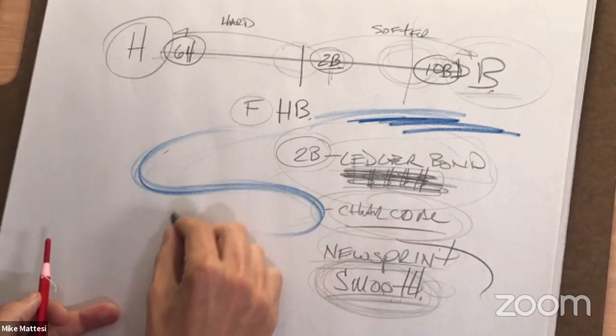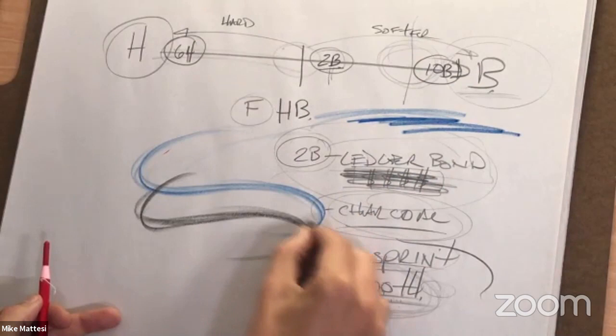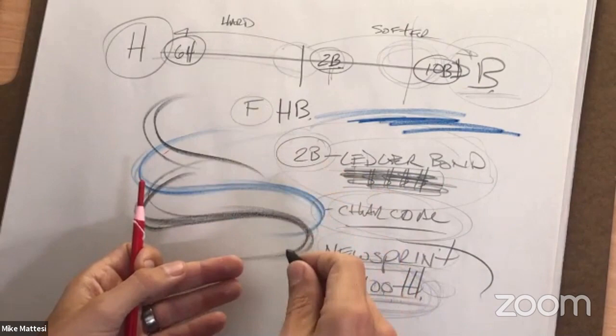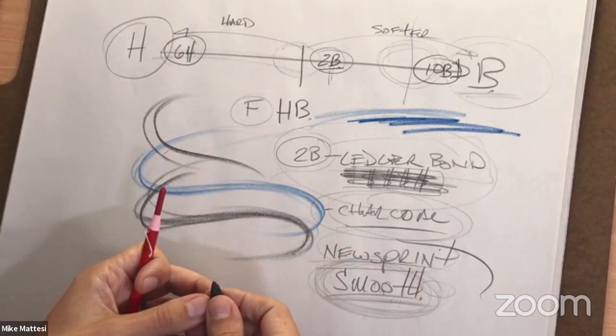Caran d'Ache is typically softer than china marker. One benefit of both wax-based tools is that they have a matte finish, which photographs better than graphite. Graphite has some reflectivity that can detract from seeing the drawing clearly in photos.